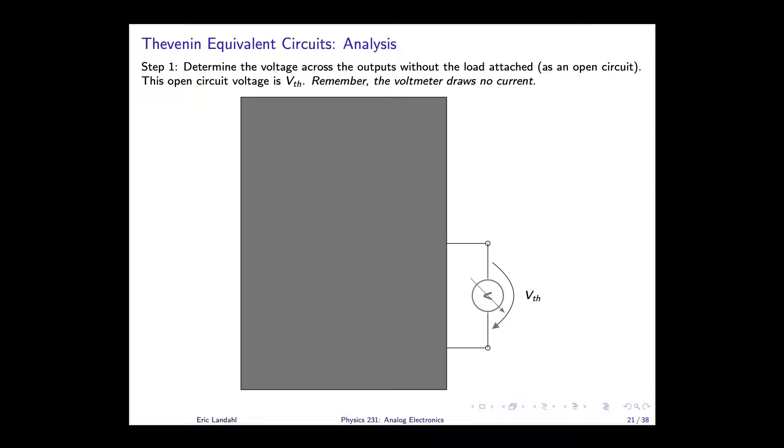So the first step is to determine Vth. Vth is going to be the open circuit voltage, that is the voltage across the circuit with nothing attached. That's by definition. Now remember, a perfect voltmeter draws no current. It has infinite resistance. In fact, it's not infinite, but it's tens of millions of ohms. So essentially no current in it, basically doesn't load your circuit. So what you measure with a voltmeter across the open terminals is Vth. That's very simple, the open circuit voltage.